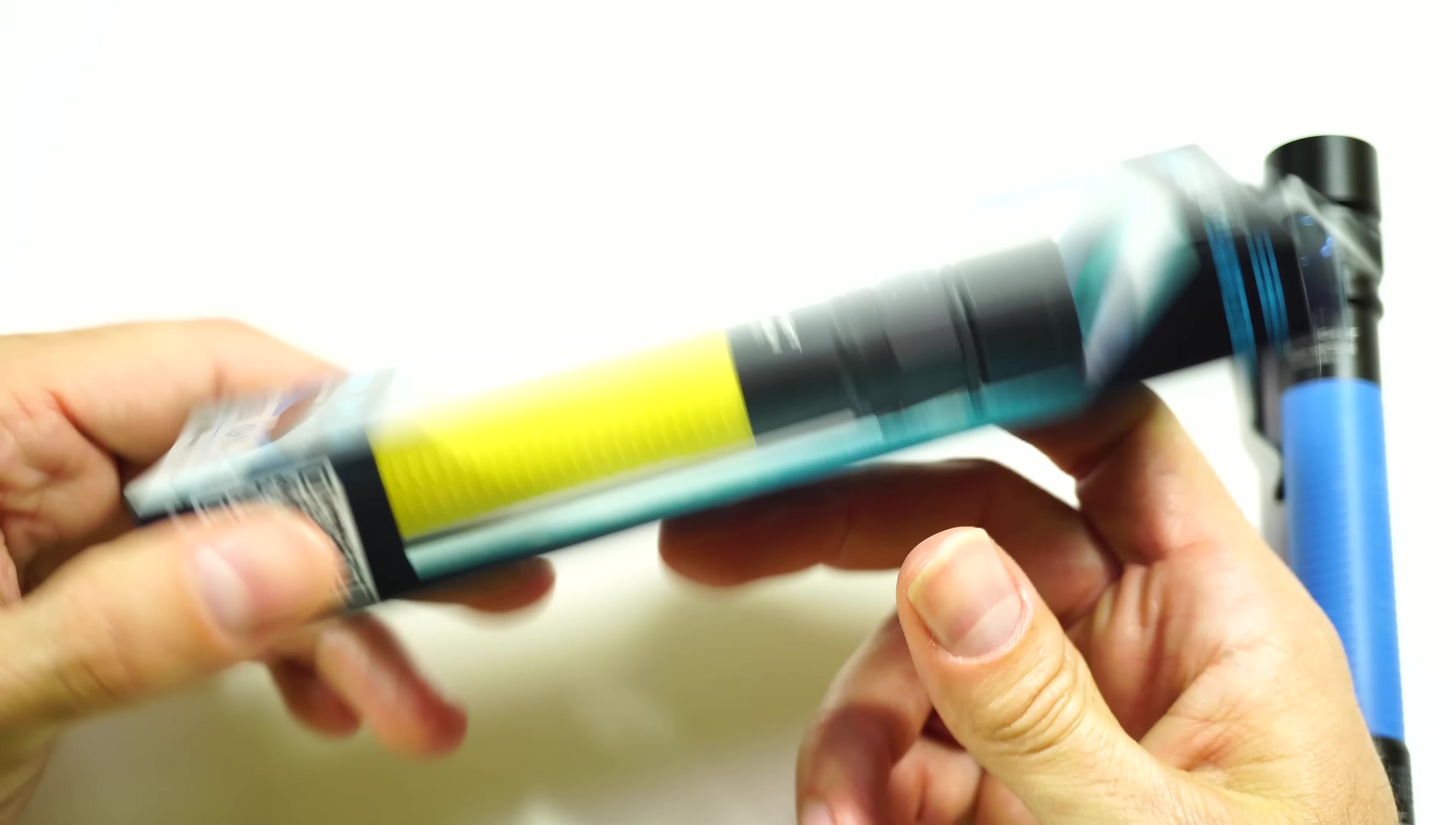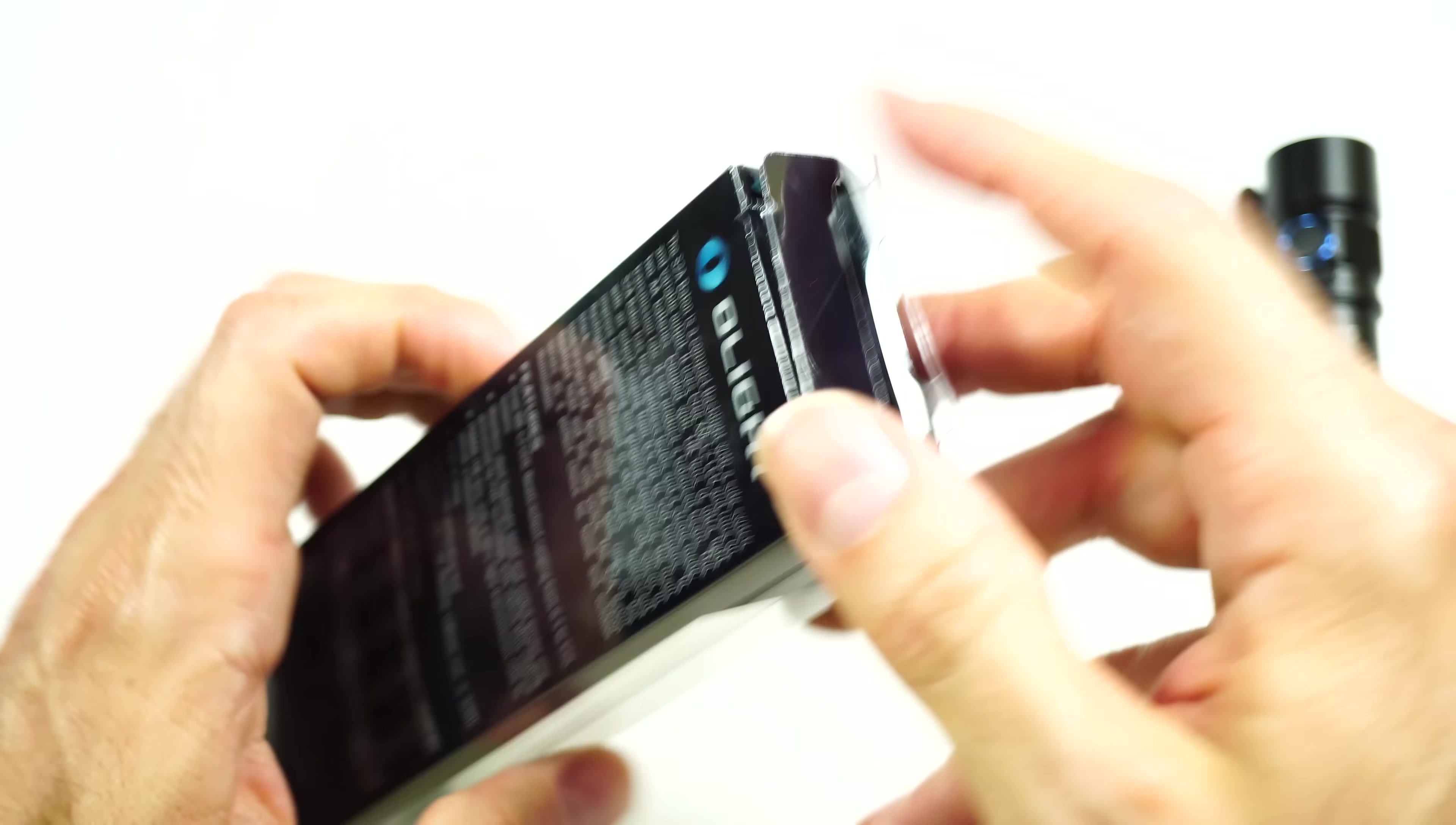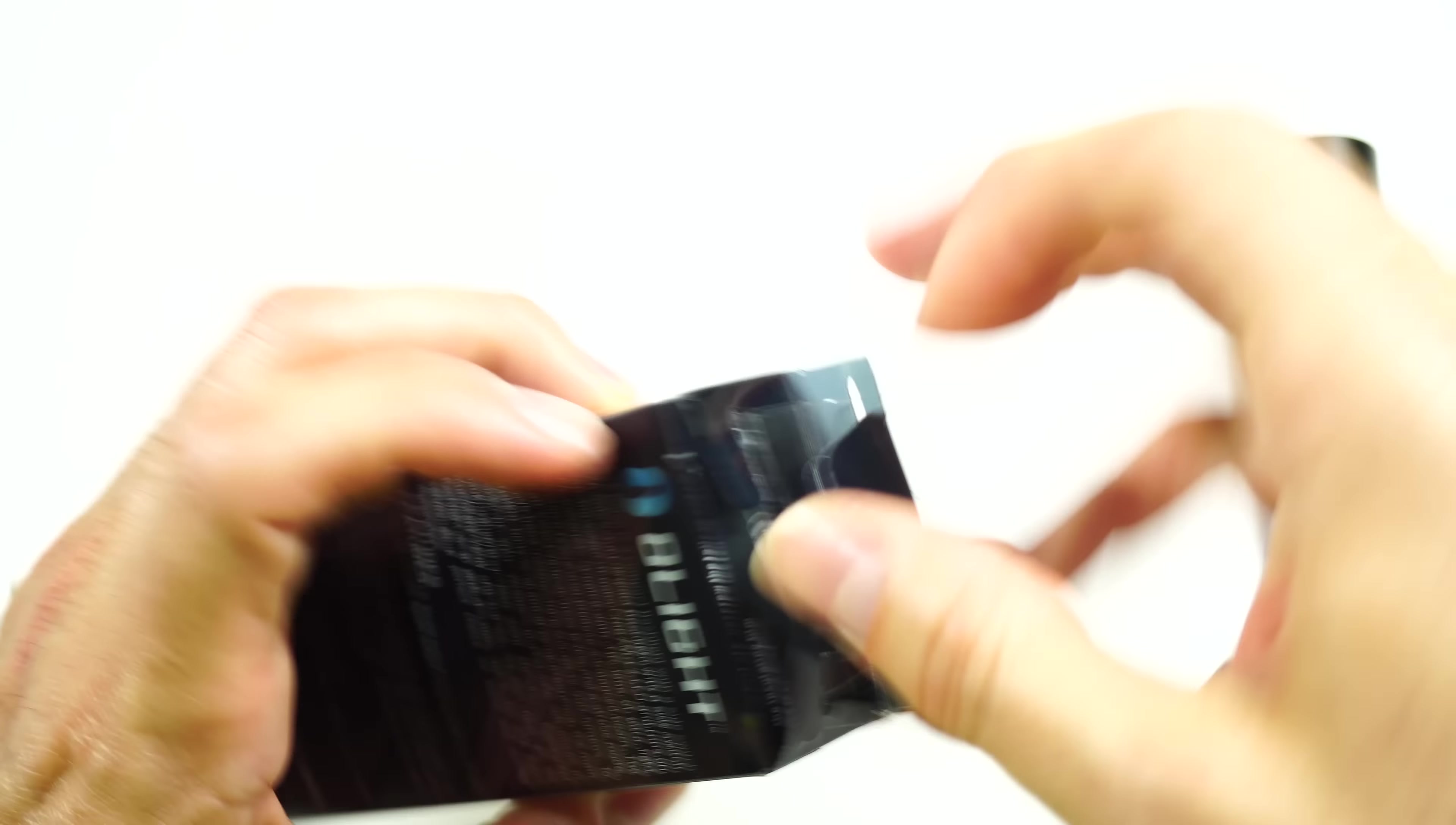Let me show you what else you get with this light. Let me bring in one of these. Here is how it comes packaged. Plastic see-through case here on the back, covers some of the specifications, open it up, and show you what you get here.